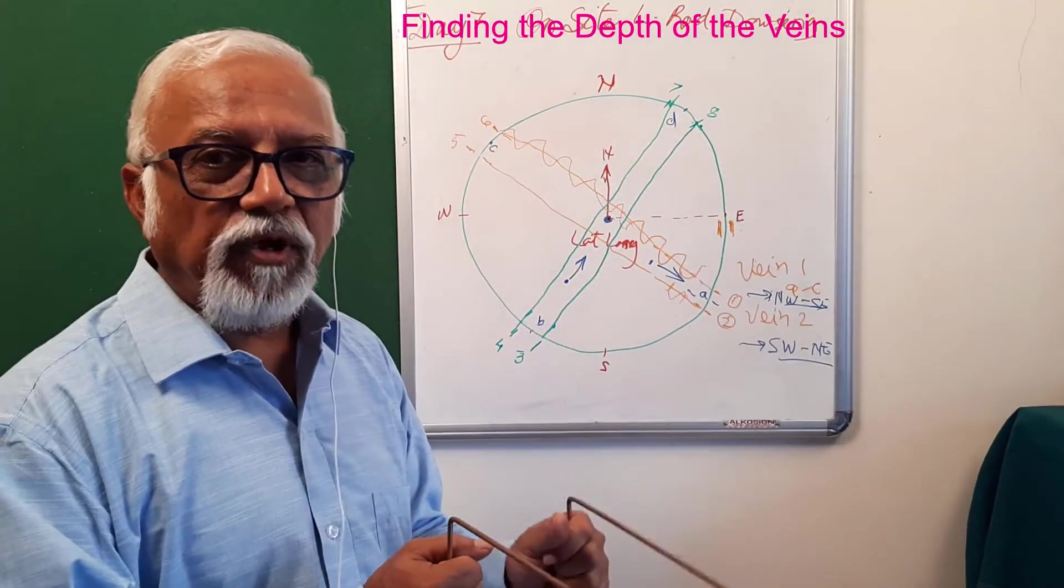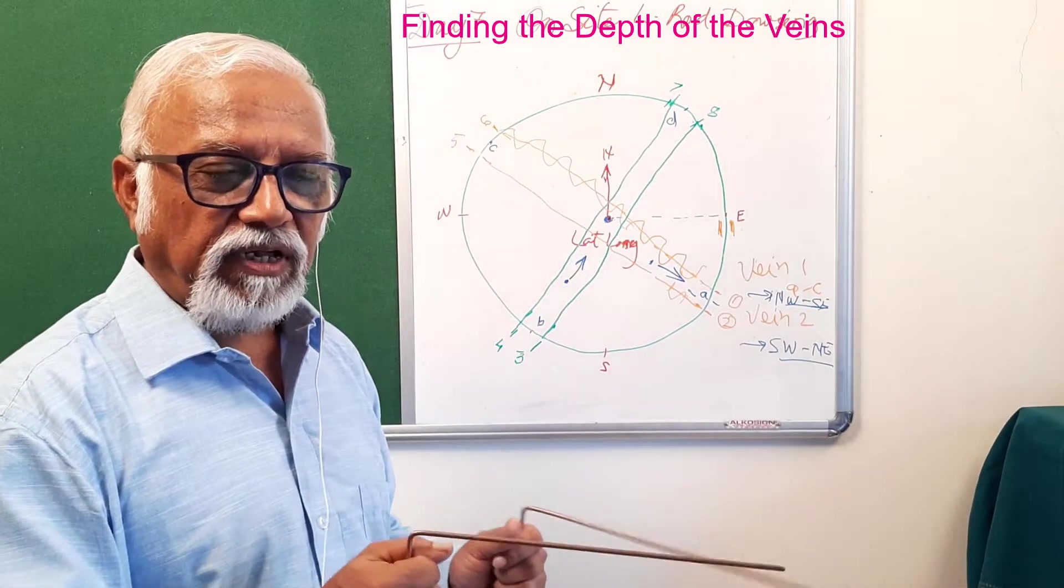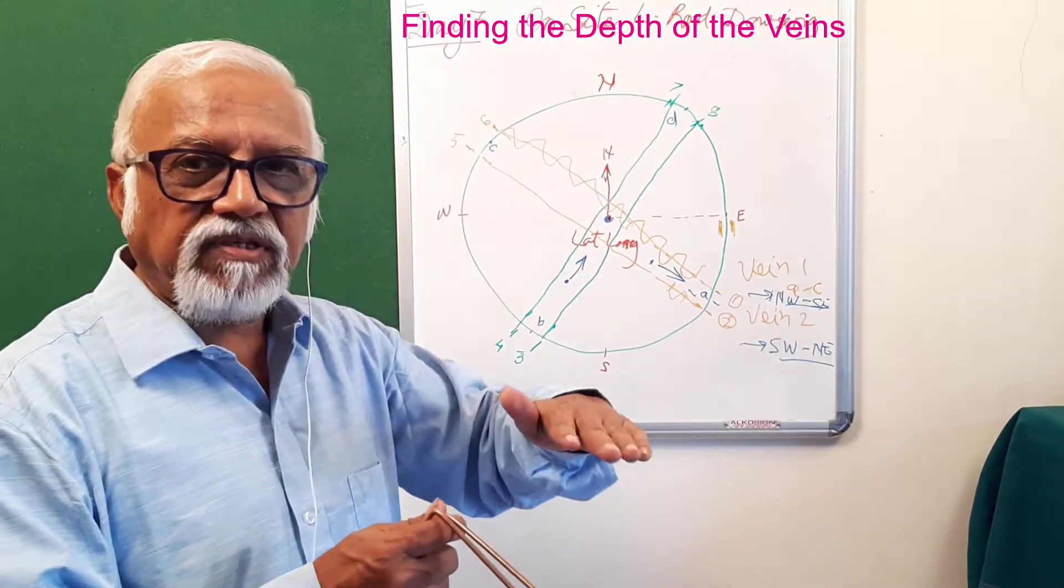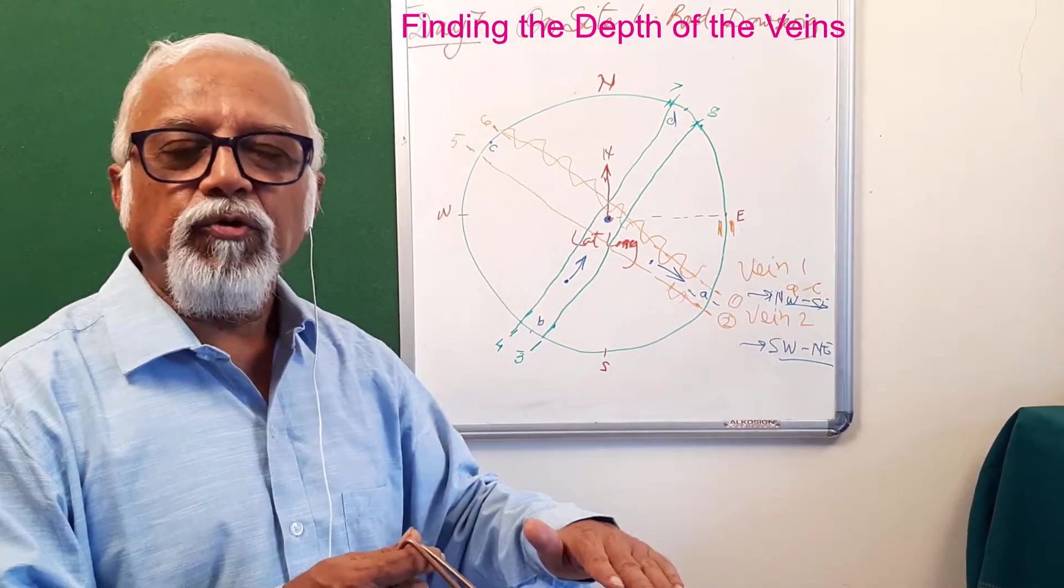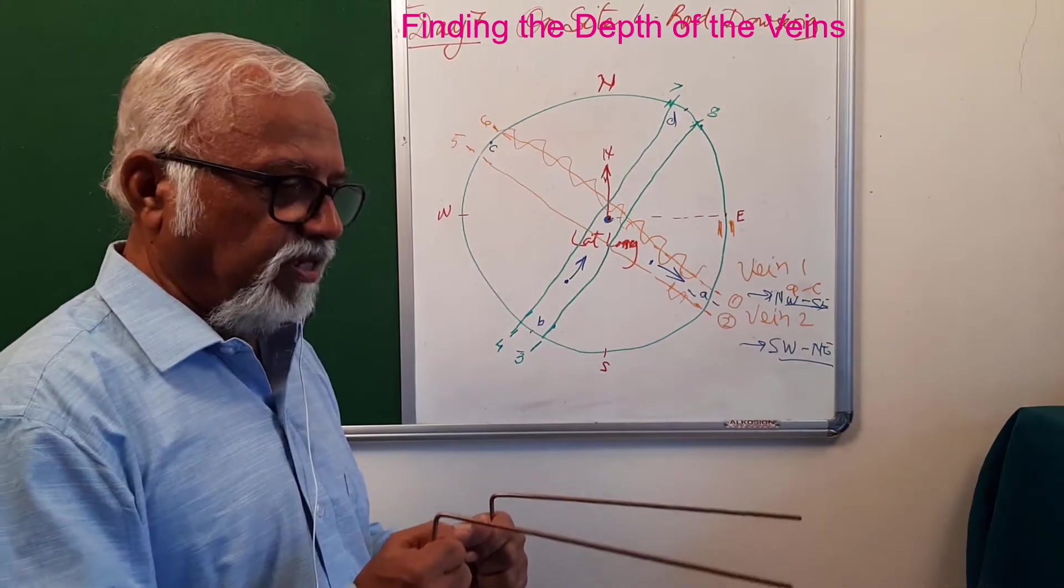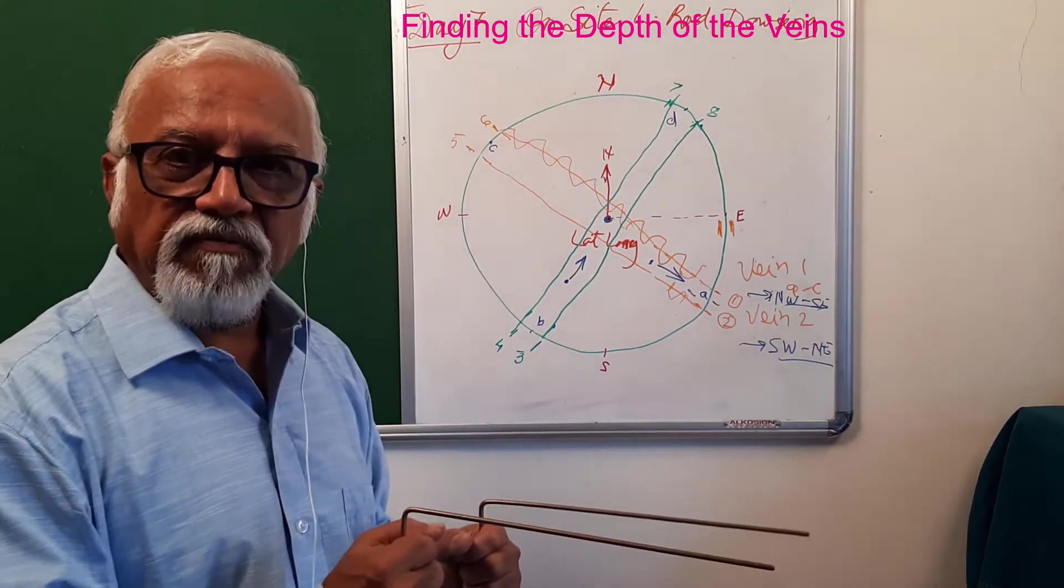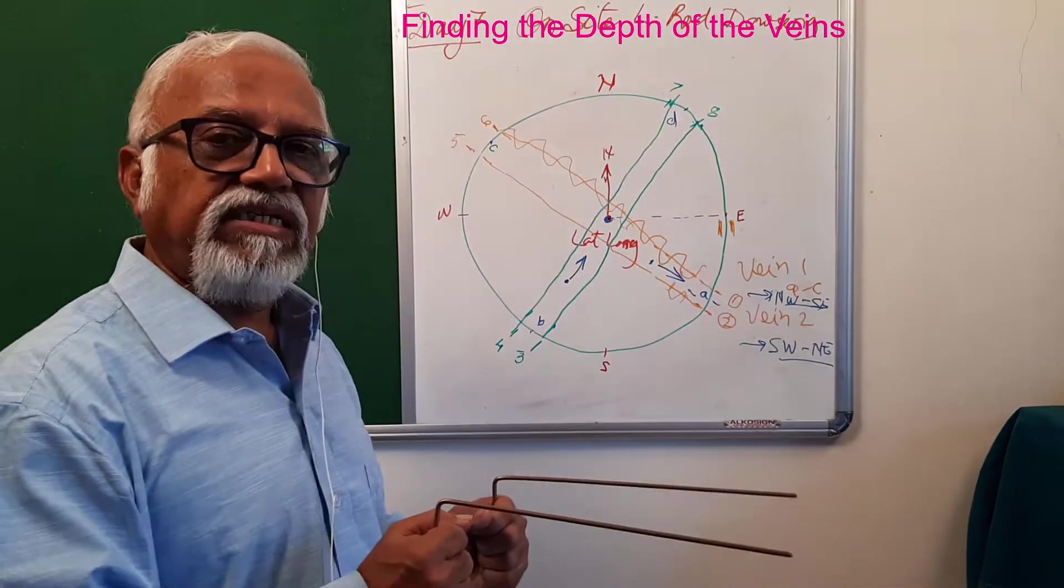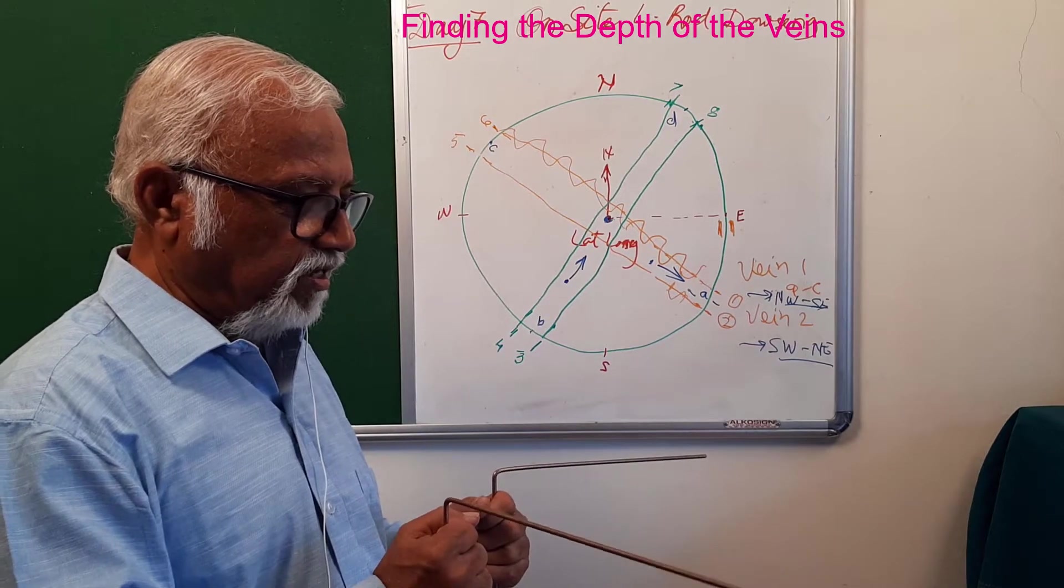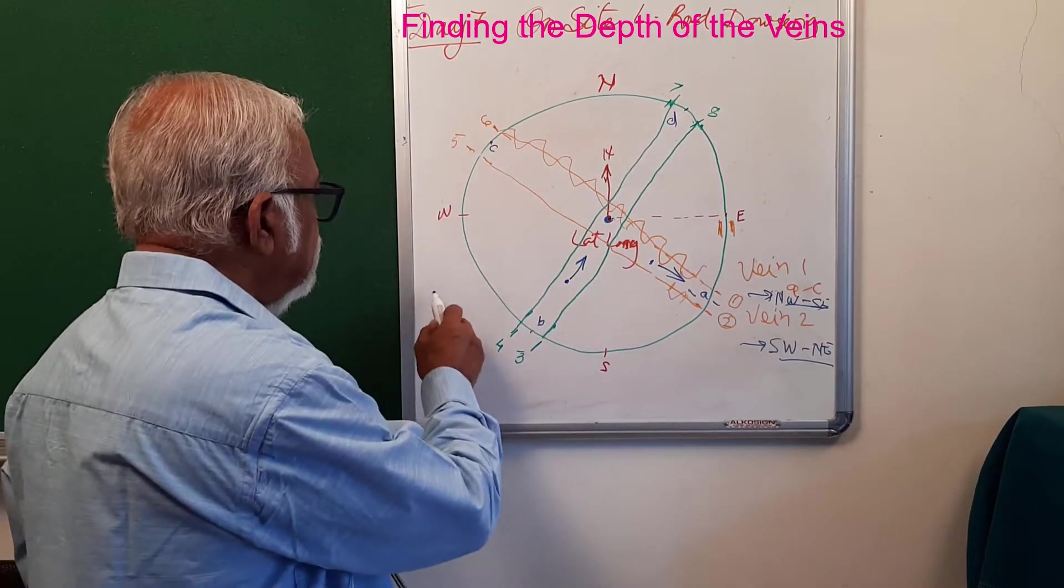We program that once we are standing on that particular vein, I would like to know the depth of the top surface of the water. So I hold my rods, put in the question: I'm standing on this vein, please let me know the depth of the top surface. I start counting - 10, 20, 30, 40, 50, 60. Say at 60 it deflected. So for vein one, the top surface is 60 feet.